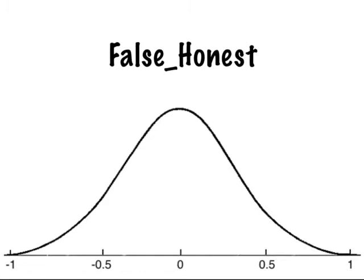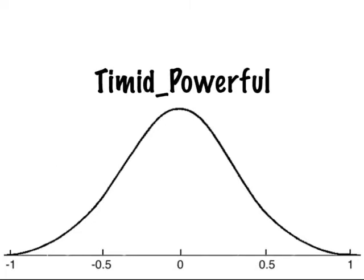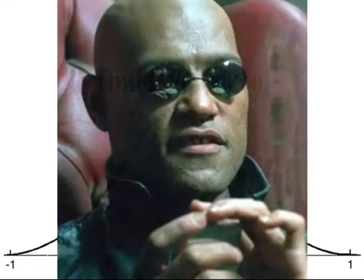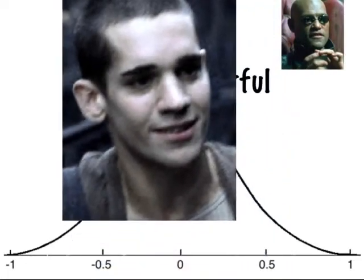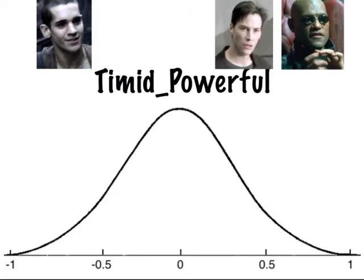False Honest is a measure of how likely a person is to tell the truth and deliver on promises. A value of zero is applied to an average person; a positive value means more honest than average, and a negative value means less honest. Timid Powerful is a more difficult concept — perhaps best described as strength of character, or assertiveness. In The Matrix, Morpheus has high positive Timid Powerful, while the kid who always pesters Neo has negative Timid Powerful. Neo himself starts off with negative Timid Powerful but shifts to positive during the course of the story.